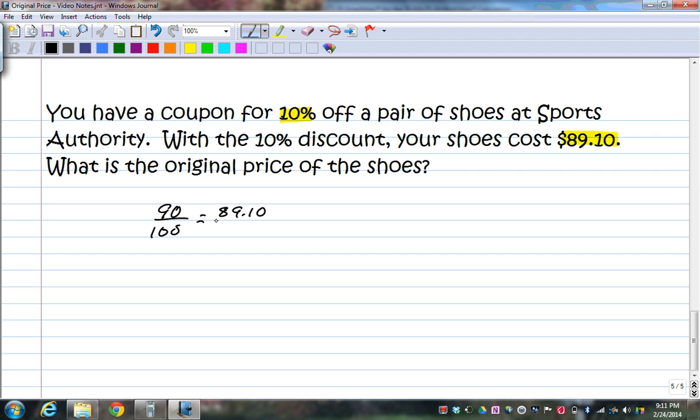Cross-multiply, you get 90B is equal to 8910. Divide both sides by 90. So, the original price of the shoes were $99. That is all, my friends. Goodbye. Have a good night now.